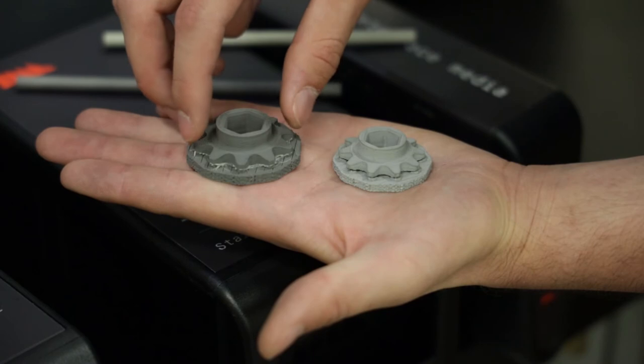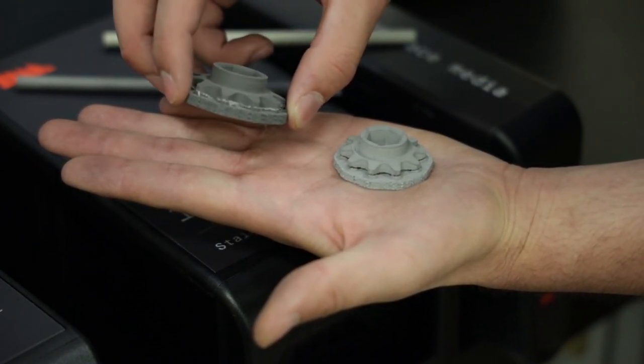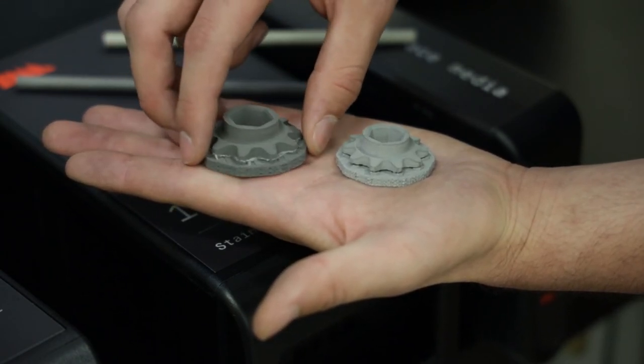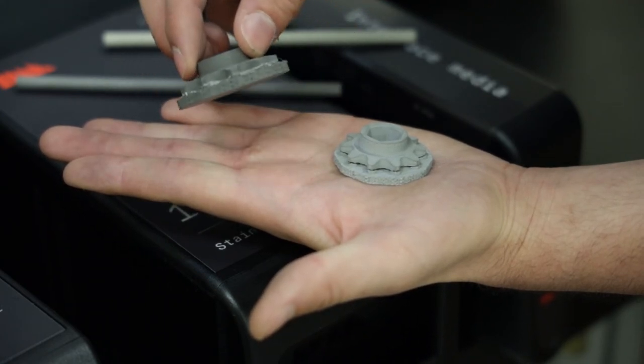So when it comes out of the printer, the part itself and the raft that it sits on are stuck together by the interface layer. So that's this white material that you can see right underneath the part.